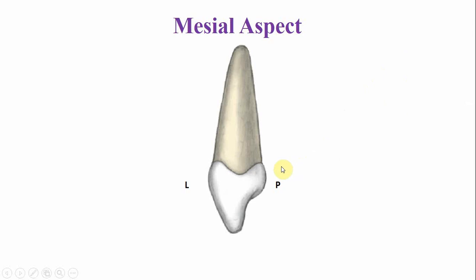This is the mesial aspect. This is the labial surface and this is the palatal surface. This is the cementoenamel junction; the CEJ or cervical line curves towards the incisal aspect. The crown appears thicker at the middle third — you can see the crown is more thick at the middle third.